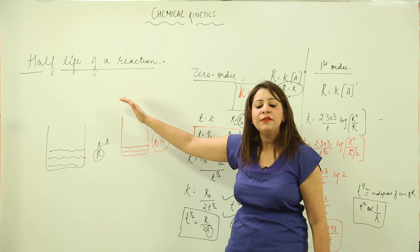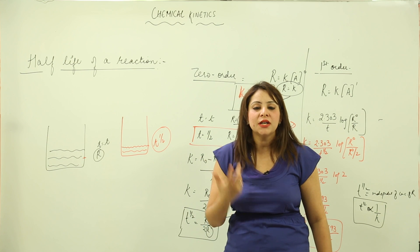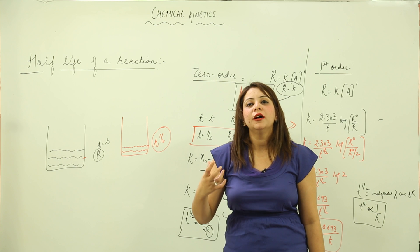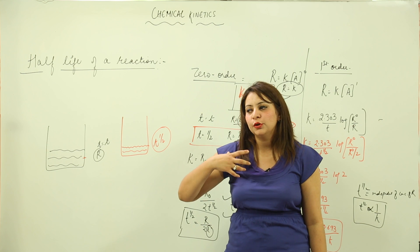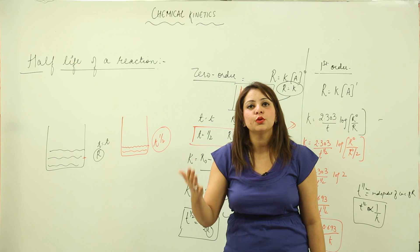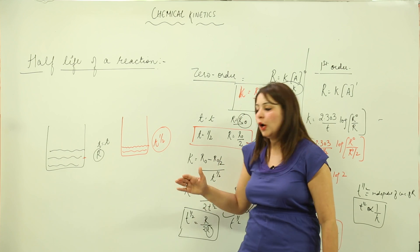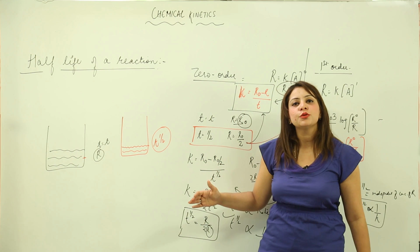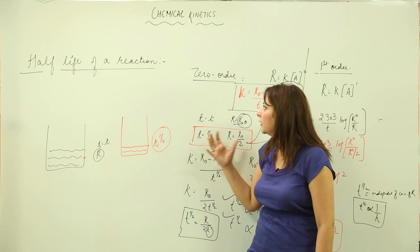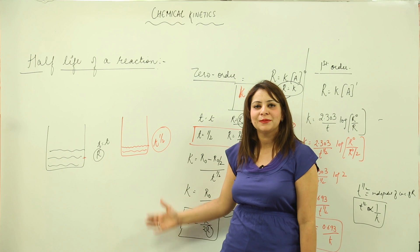To summarize: half-life is the time consumed to reduce the concentration of the reactant to half of its initial concentration. We are now in a position to solve numericals based on zero-order and first-order half-life. Just look at the board carefully.